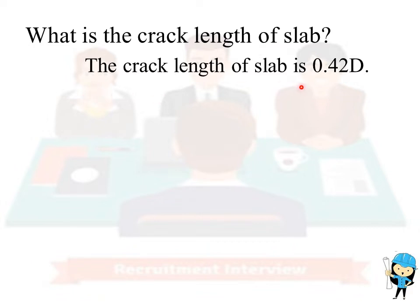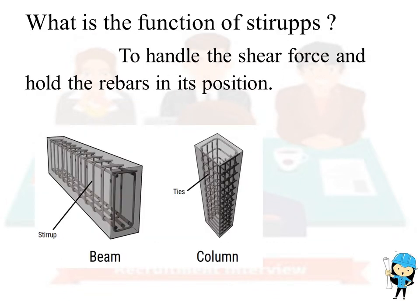The third question is: what is the crack depth of the slab? The crack depth of the slab is 0.42d, where d means the depth of the slab. The depth is taken from the top of the slab to the bottom of the slab. The fourth question is: what is the function of stirrups?